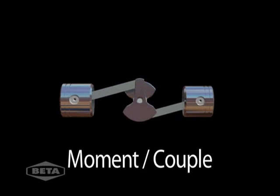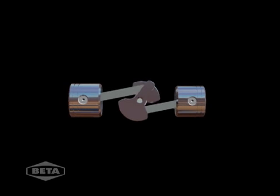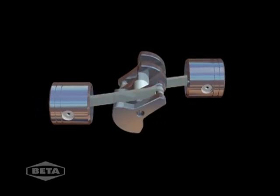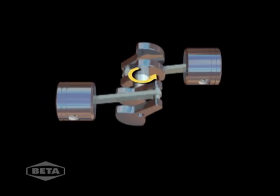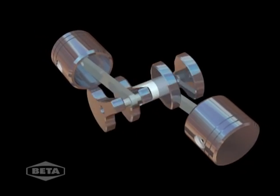Moment or couple is referred to as the magnitude of force applied to a rotational system at a distance from the axis of rotation. In a reciprocating system, this couple is generated between throws around the vertical axis of the compressor.